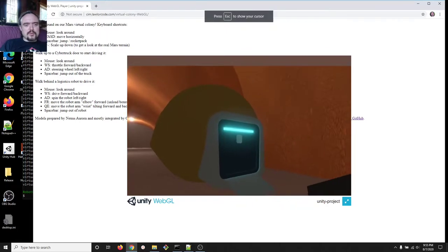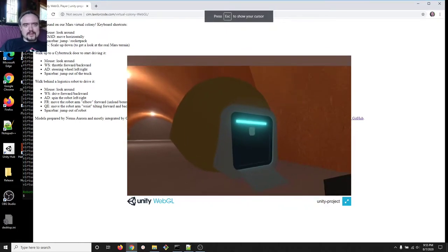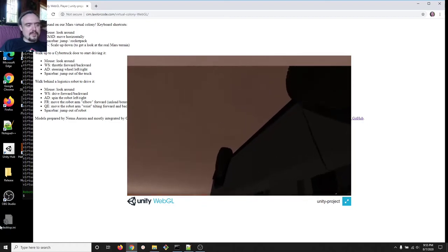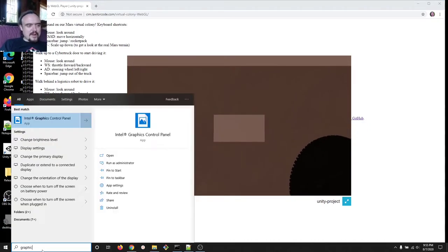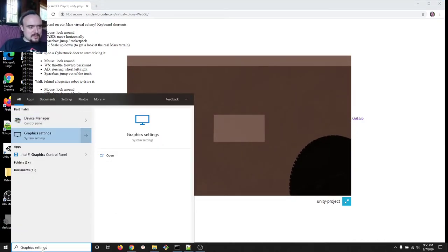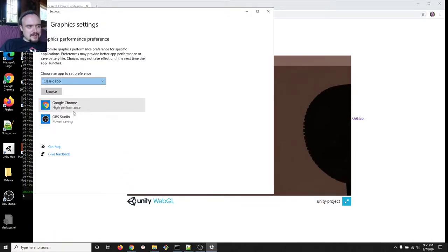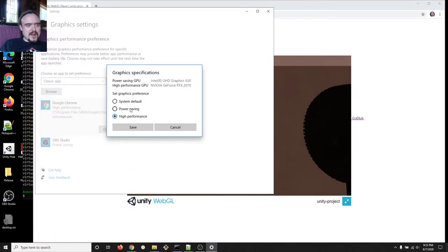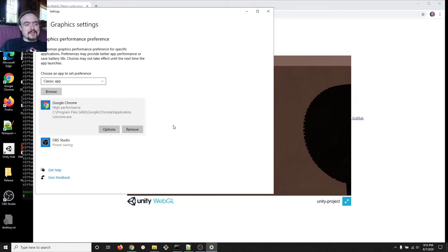If you want to get good performance out of your WebGL in a web browser, if you go to graphics settings on Windows and just make sure that you've got your browser set to high performance. The default seems to be power saving. If you've got two GPUs, one of which is not nearly as good, it'll default to the not nearly as good GPU for a web browser to save battery.